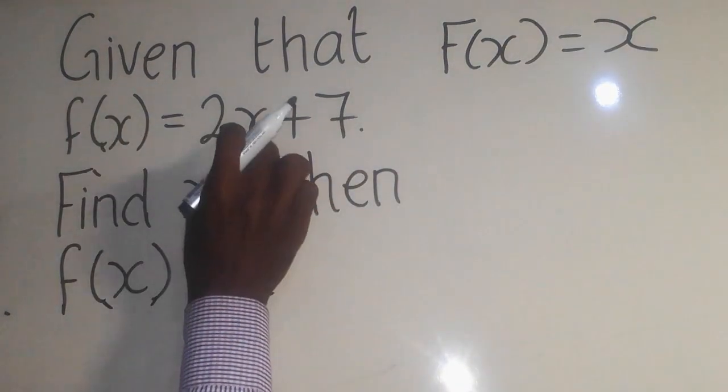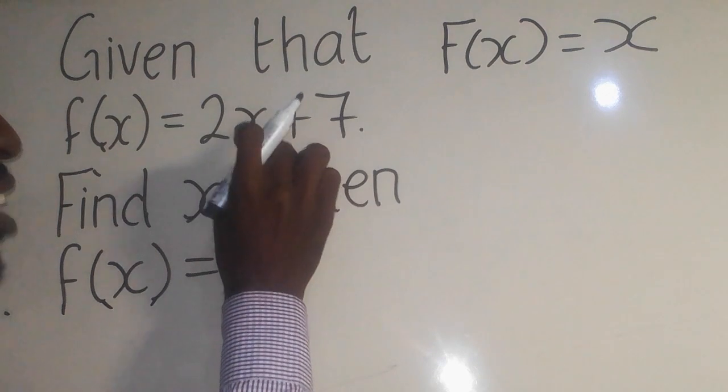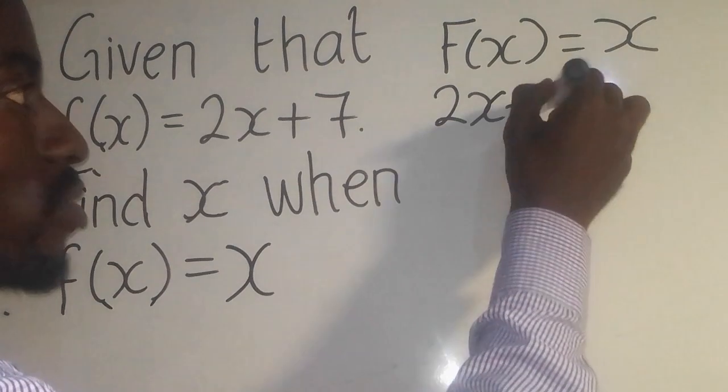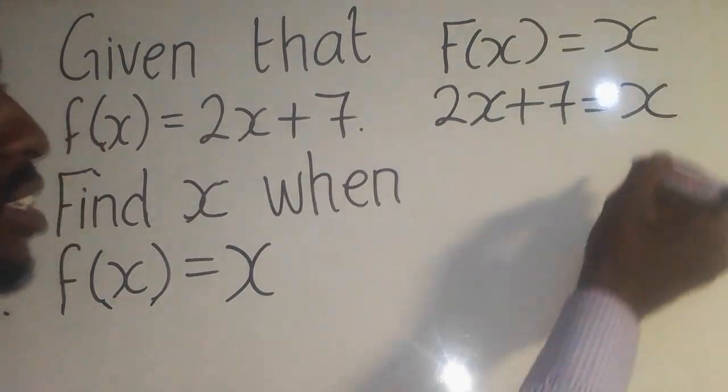Now, we know that f(x) is equal to this one. So when there is f(x), you put here. So it will be 2x plus 7 equal to x there.